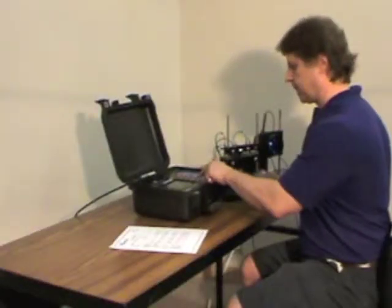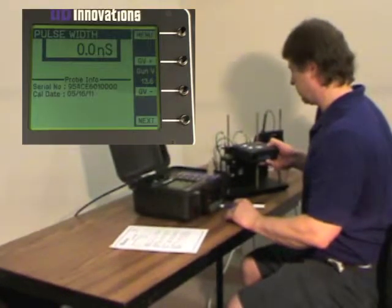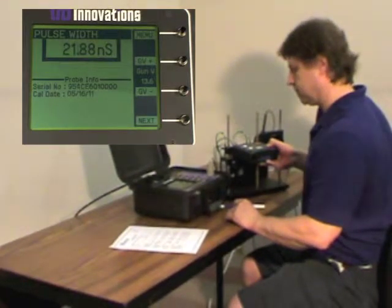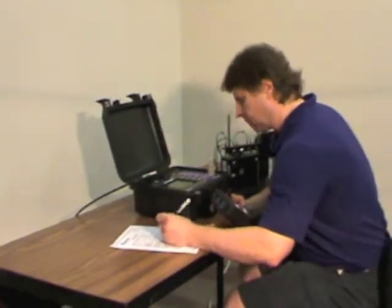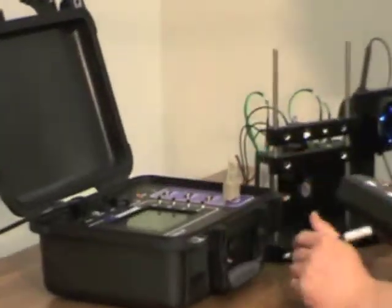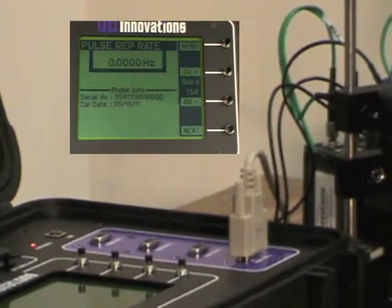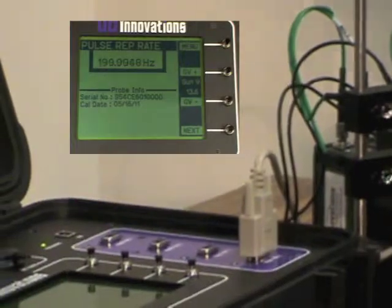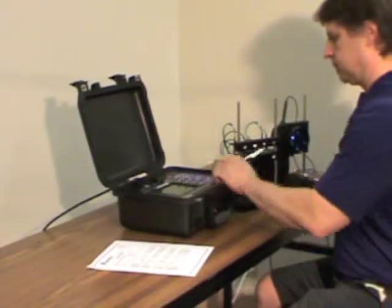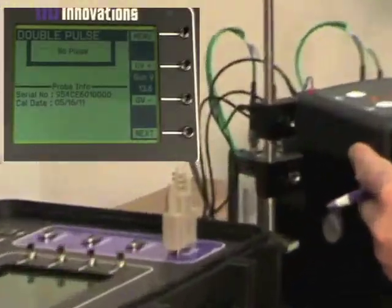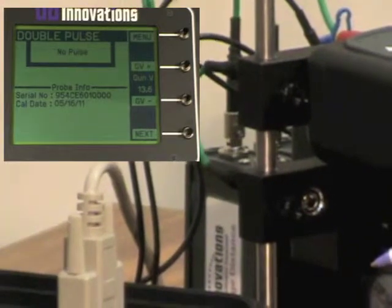We will begin our testing with the pulse width test. Now remember the tests are done on the LT and the certification sheet is handwritten. The next test is the pulse rep rate. The next test is the double pulse. We see no double pulse.